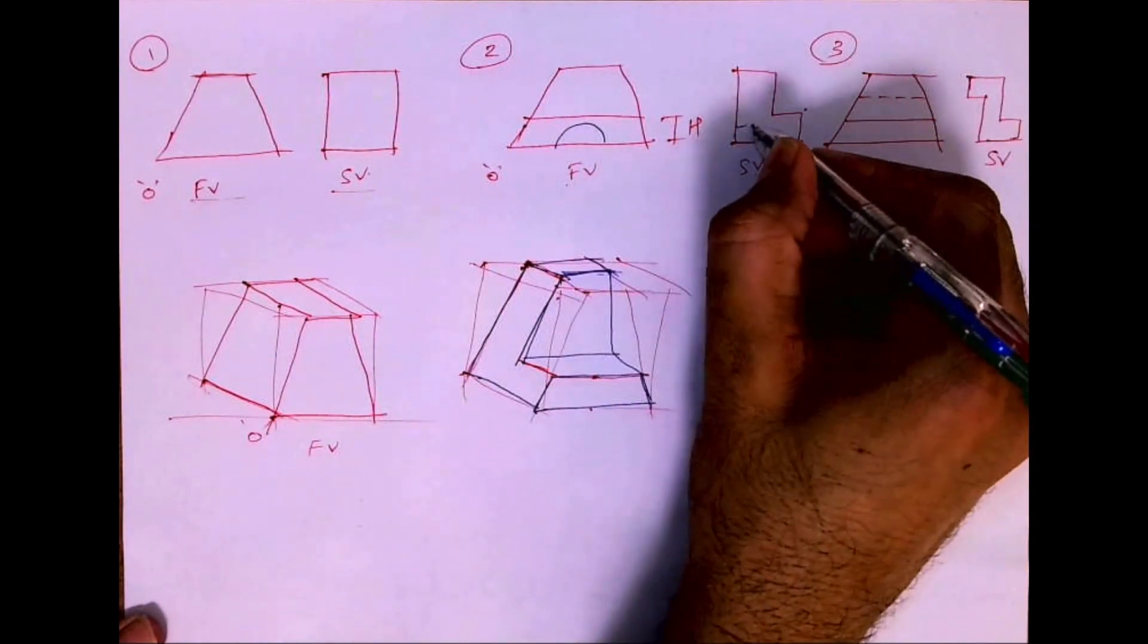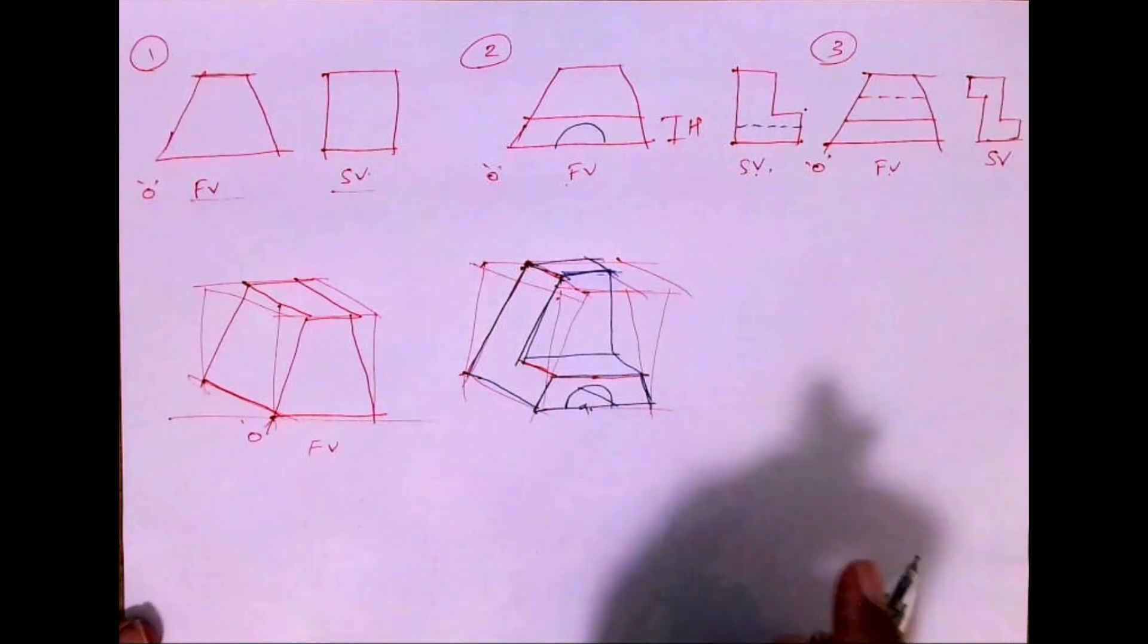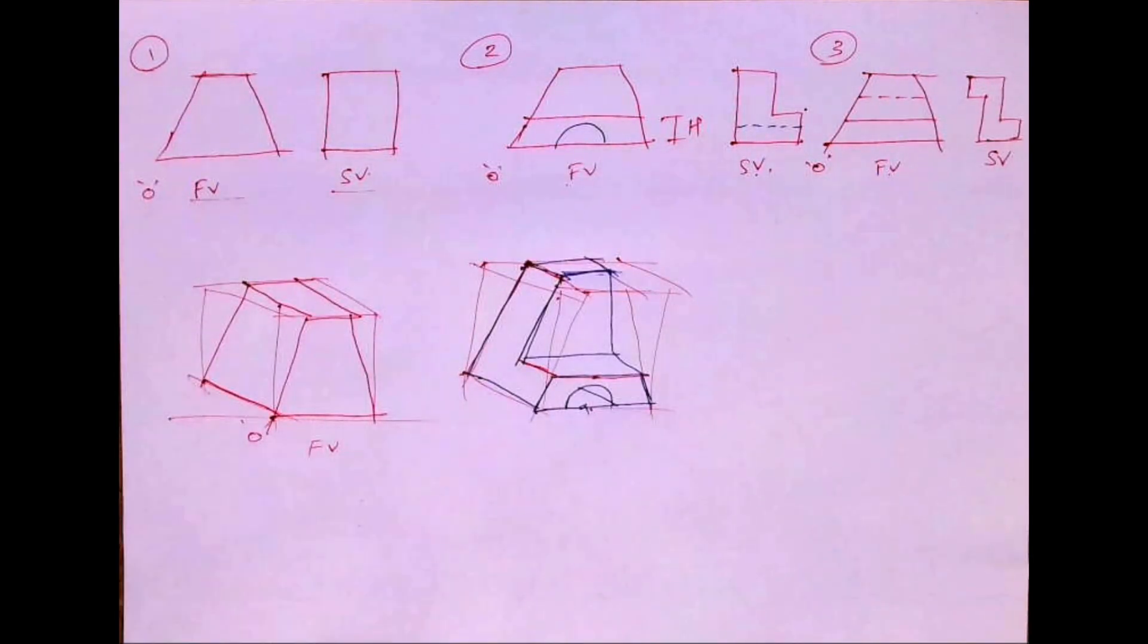Let's say if you have a variation, if you have a circular object over here, a hole kind of thing, then it will be like this.